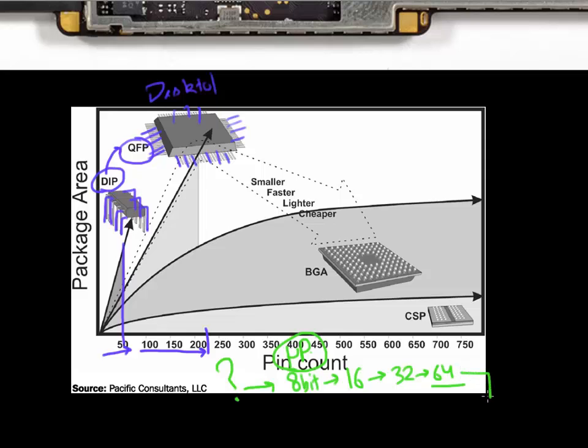So if you're communicating with your DRAM, you now need 64 times 2. Because each line, for each signal, you need one reference line and one ground line and the signal line. So you need more and more lines, more and more pins to communicate if you're moving, if you're increasing the bit size of your microprocessor.